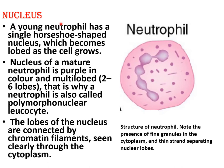Regarding the nucleus: the young neutrophil has a single horseshoe-shaped nucleus, which becomes lobed as the cell grows. The nucleus of the mature neutrophil is purple in color and multi-lobed — the number of lobes varies from 2 to 6. That is why the neutrophil is also known as polymorphonuclear leukocytes. The lobes of the nucleus are connected by chromatin filaments.